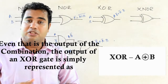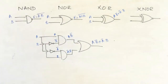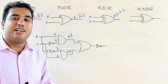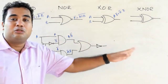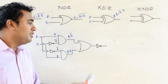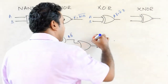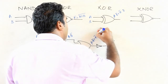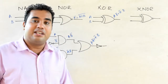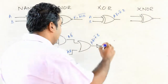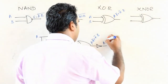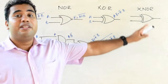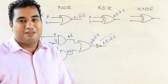Now we move on to the XNOR gate. Simply, this is the combination of the XNOR gate: the XOR output goes through a NOT gate. The XOR output was A·B bar + A bar·B, and that becomes an input to the NOT gate, which generates the complement: (A·B bar + A bar·B) bar. That is the output of the XNOR gate.